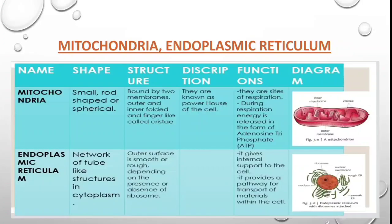What are the functions of endoplasmic reticulum? It gives internal support to the cell — its network-like structure provides structural support. It also provides a pathway for the transport of material within the cell. Material can travel from outside through the endoplasmic reticulum and into the nucleus, because the endoplasmic reticulum is attached to the nucleus.